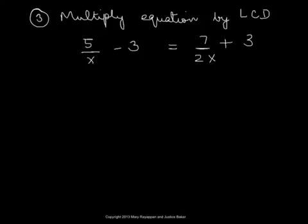The third step is to multiply the equation by LCD. The equation we have is 5 over x minus 3 equals 7 over 2x plus 3. We multiply this equation by the LCD we found.